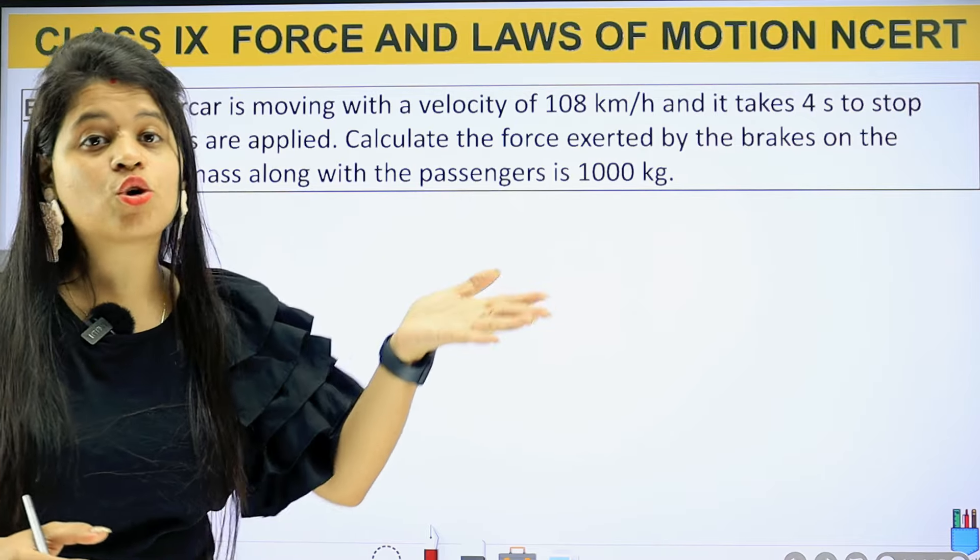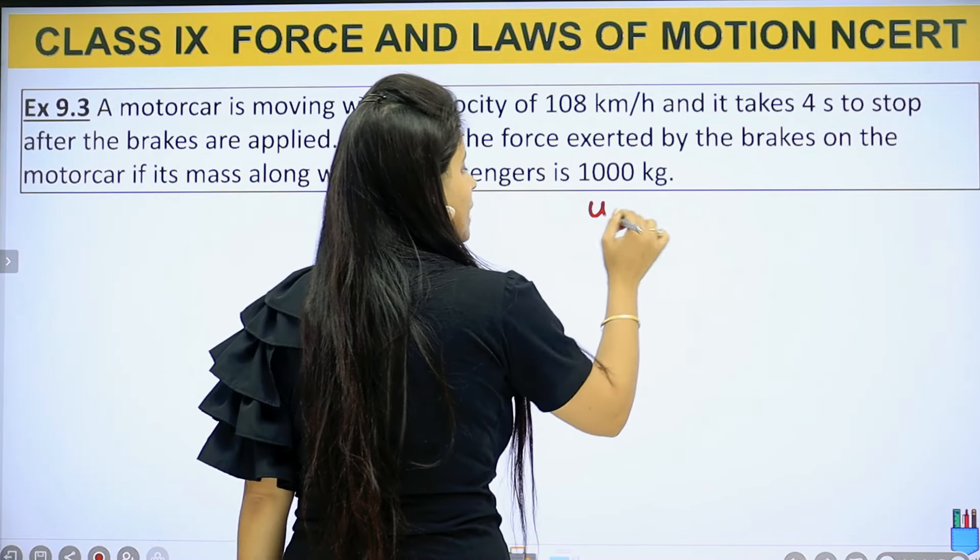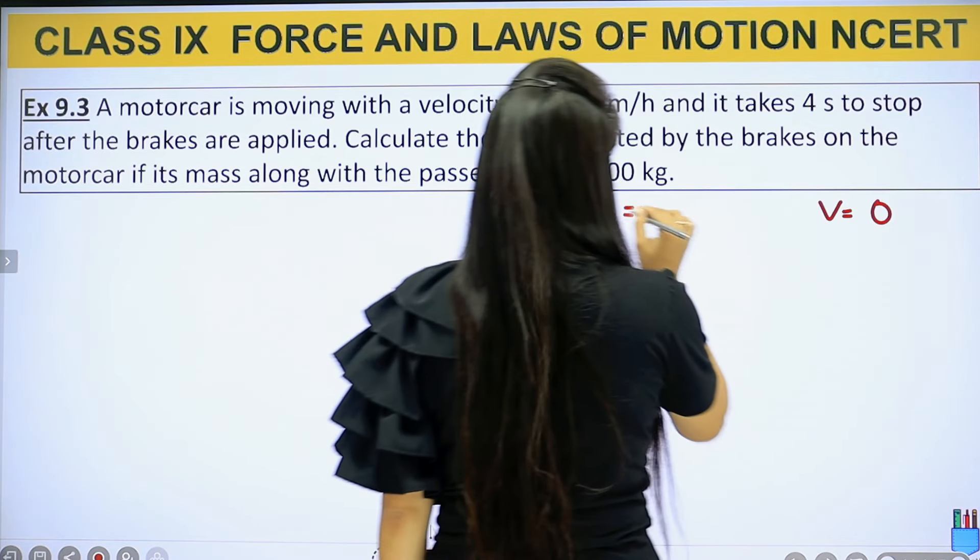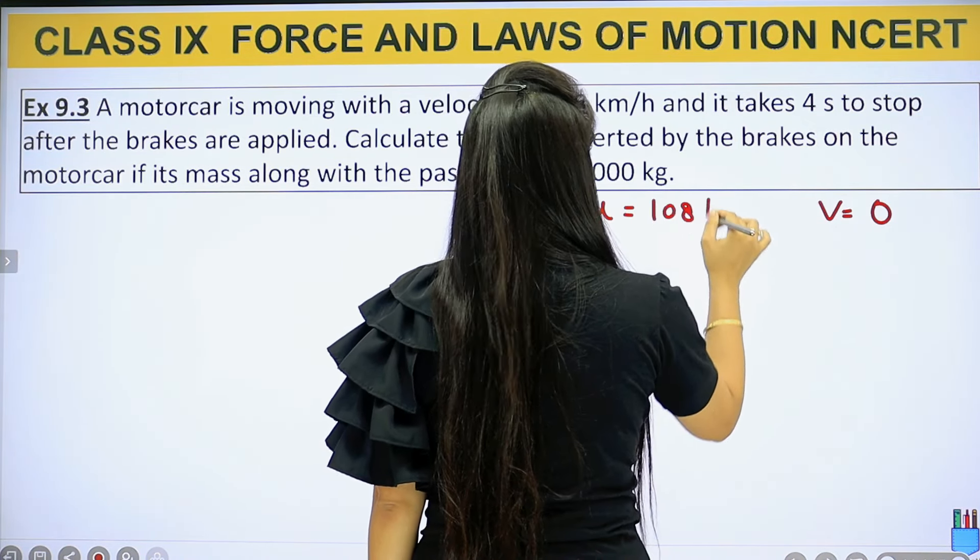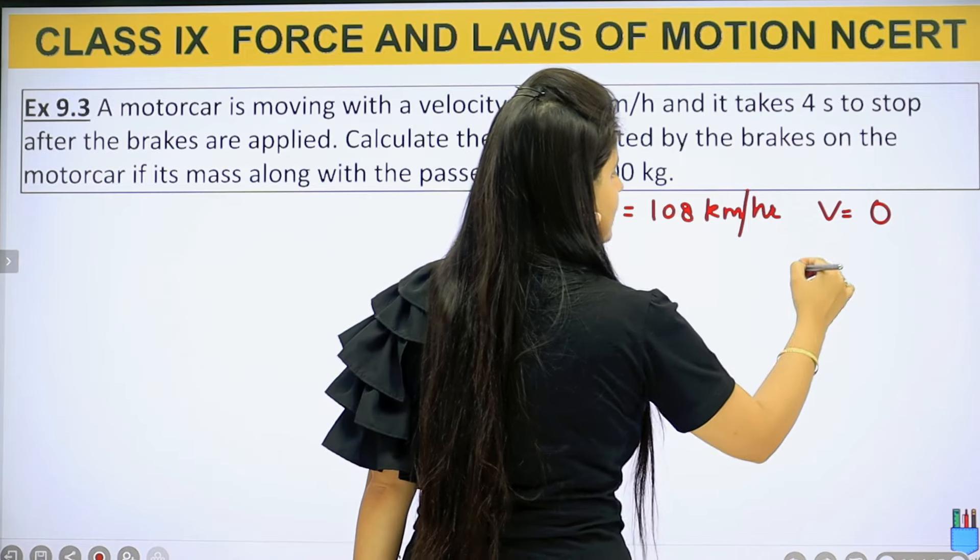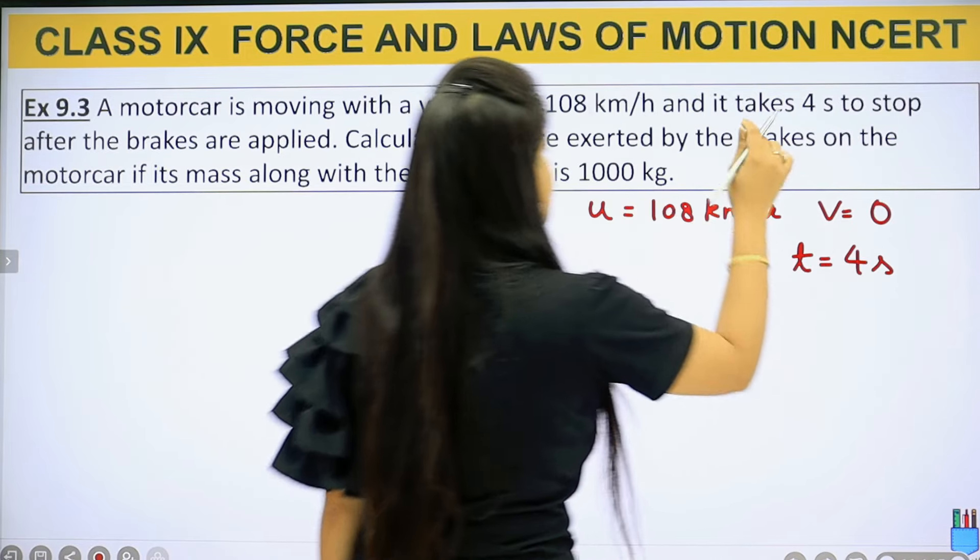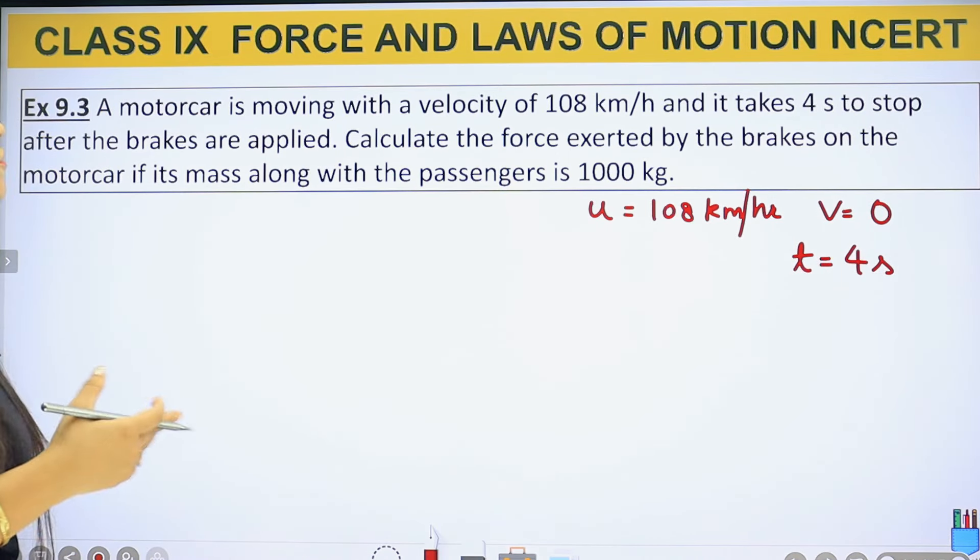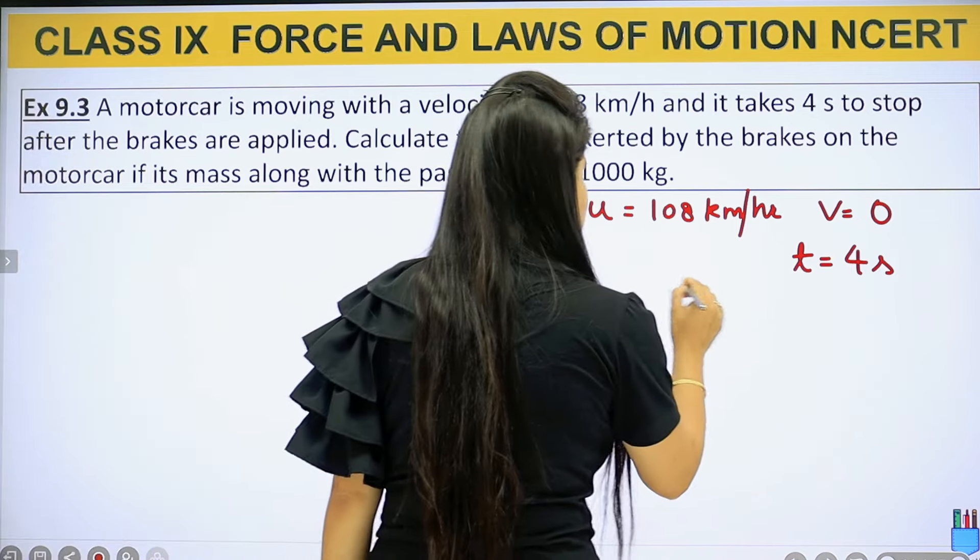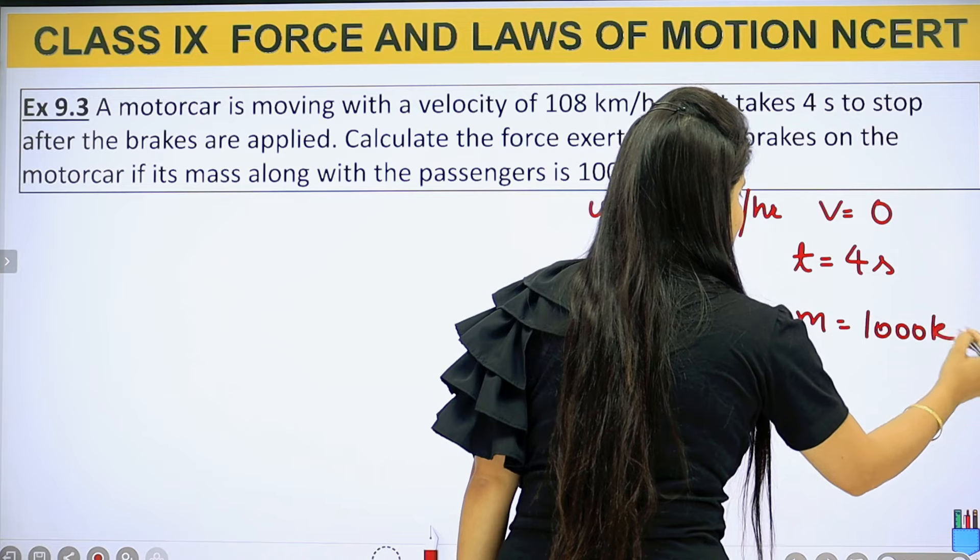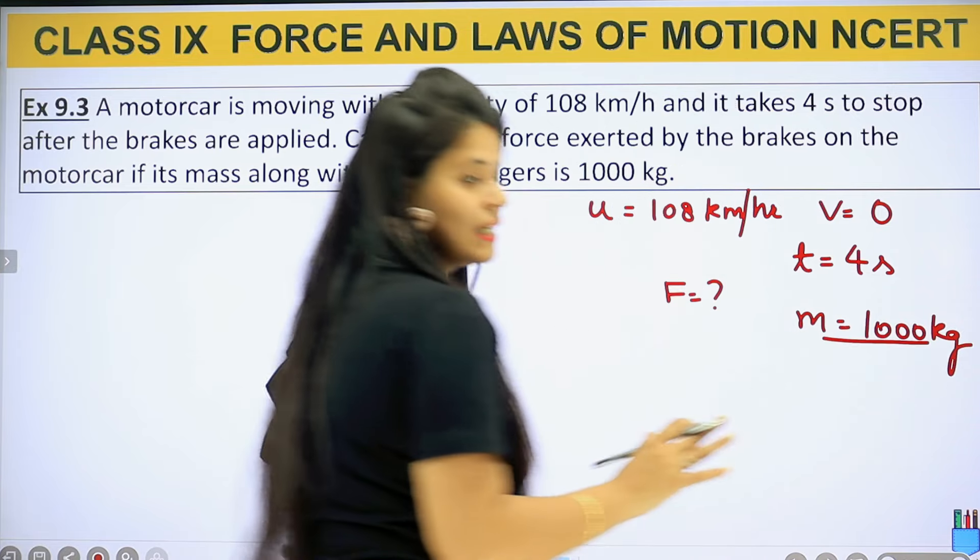That means what we are given is the initial velocity, because if we are talking about the final velocity after the brake, the final velocity is basically zero. We have 108 km per hour. How much time has it been? 4 seconds. Calculate the force exerted by the brakes on the motor car if its mass along with the passenger is 1000 kg. We have to find how much force will it be, and the mass of the vehicle with the passengers is 1000 kg.